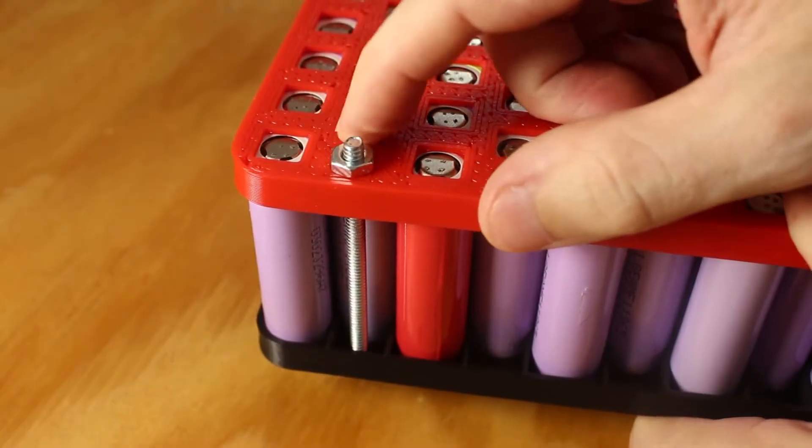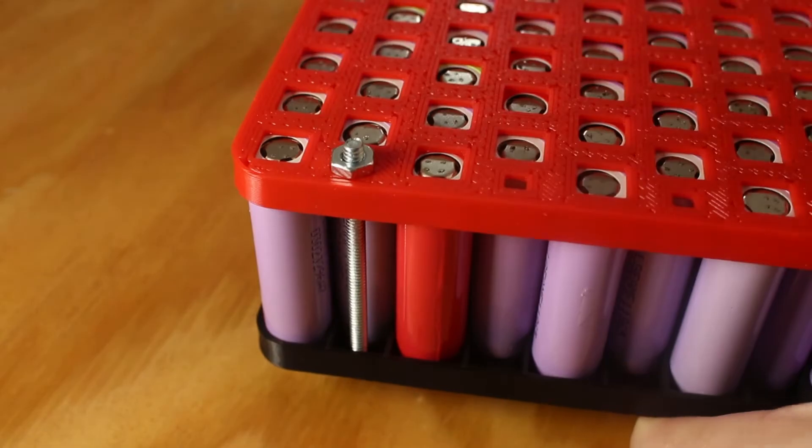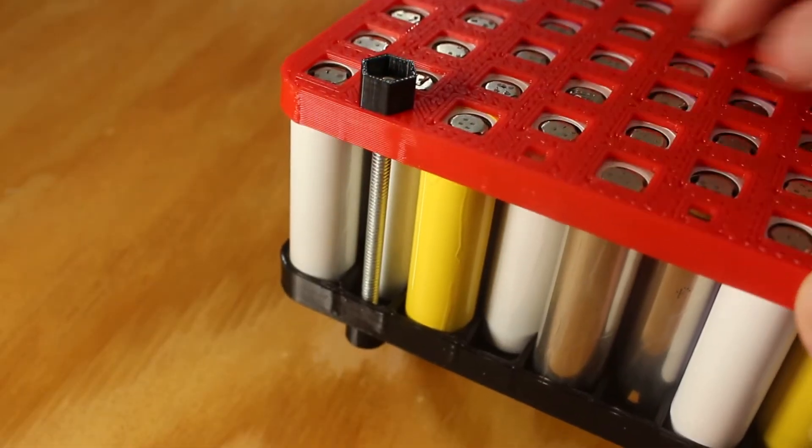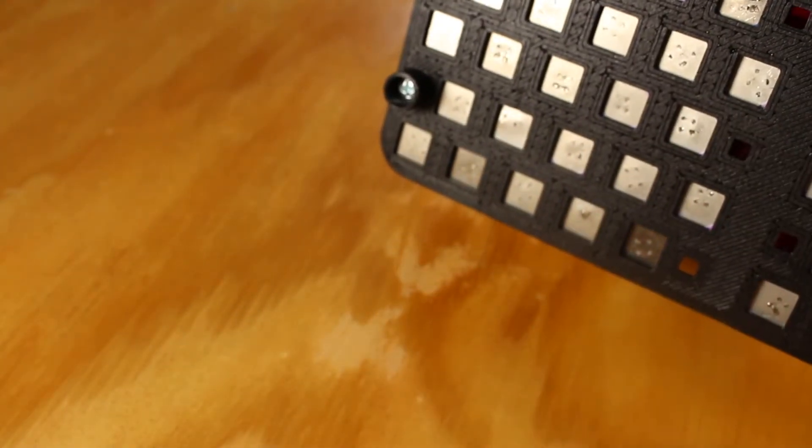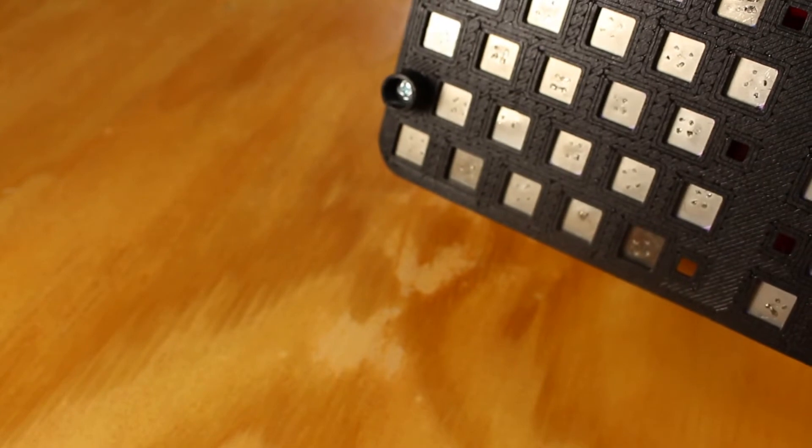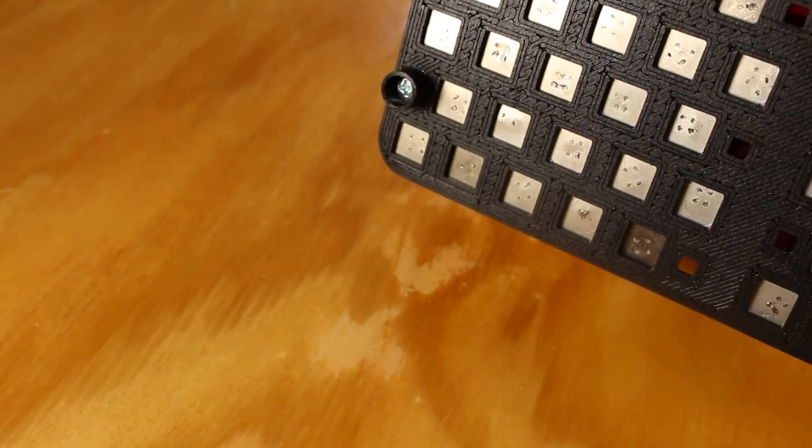The bolts were concerning me a little bit since it would be very easy to short them out. I did a test print of these standoff insulators and I think that's the solution there. I'm going to wait until the end of the pack assembly to print these because I want to make sure they're taller than the wiring and the bus bars.